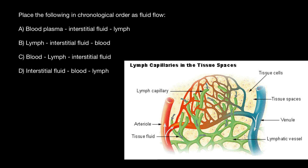We can refer to the lymphatic system as a drainage system. What gives lymph its direction is movement toward the lymphatic node. Inside, there are valves that prevent backward flow of this liquid lymph.